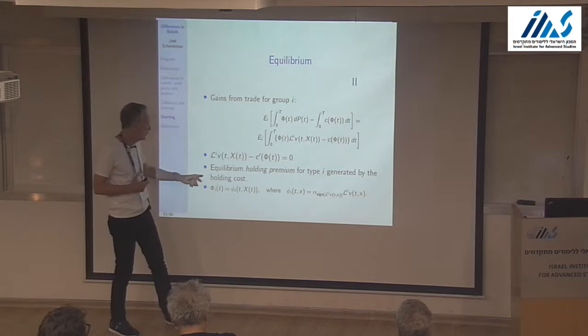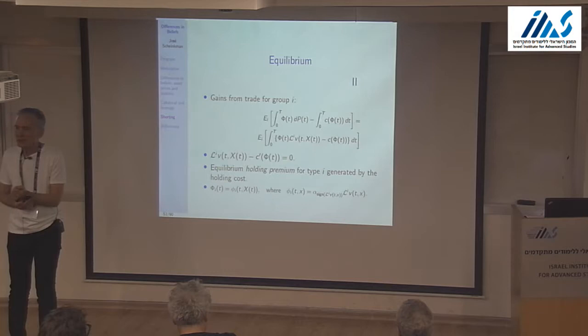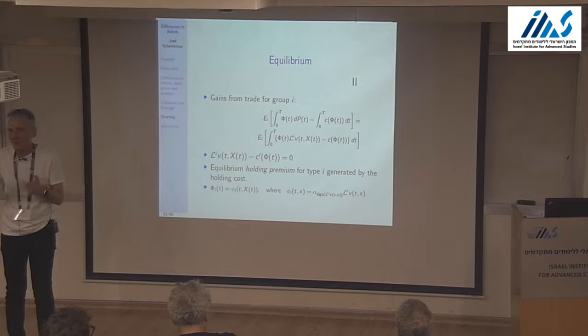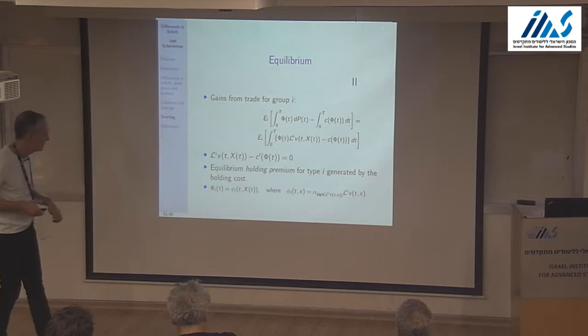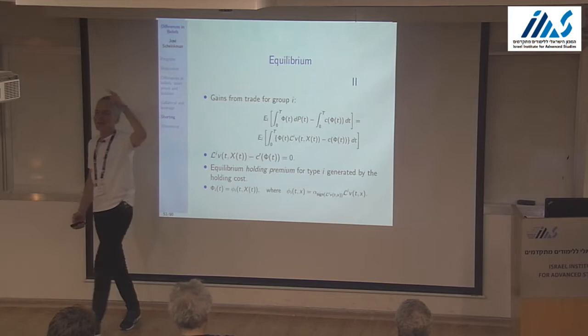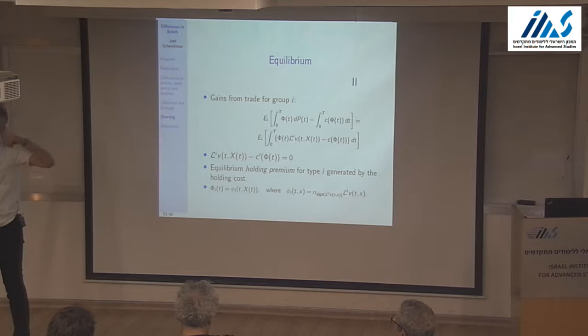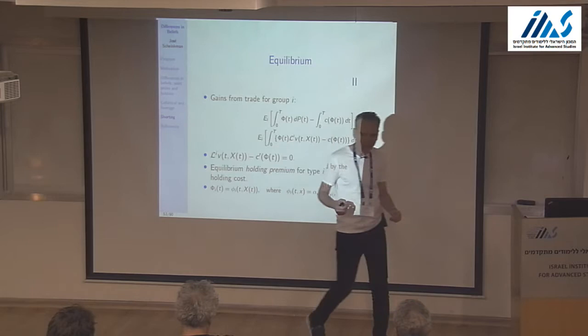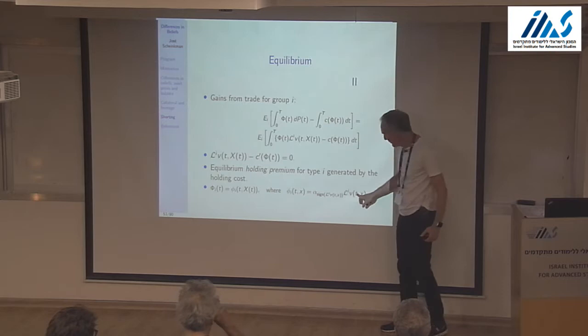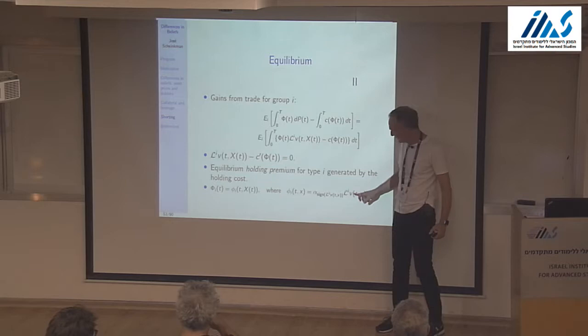Since the cost is quadratic, solving for the optimal holding is simple algebra. The derivative gives: if the expected price drift L_i(p) is positive, hold α⁺ × L_i(p) units long; if negative, hold α⁻ × L_i(p) units short. The α parameters are at the denominator because of the half in the quadratic — they cancel, leaving a clean linear expression for the optimal position.